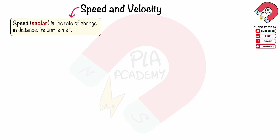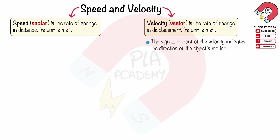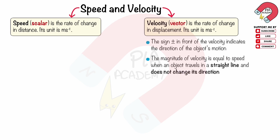Speed is a scalar quantity and its unit is meters per second. Velocity is the rate of change in displacement. Velocity is a vector quantity and its unit is meters per second. The sign — positive or negative — in front of the velocity indicates the direction of the object's motion. The magnitude of velocity is equal to speed when an object travels in a straight line and does not change its direction.